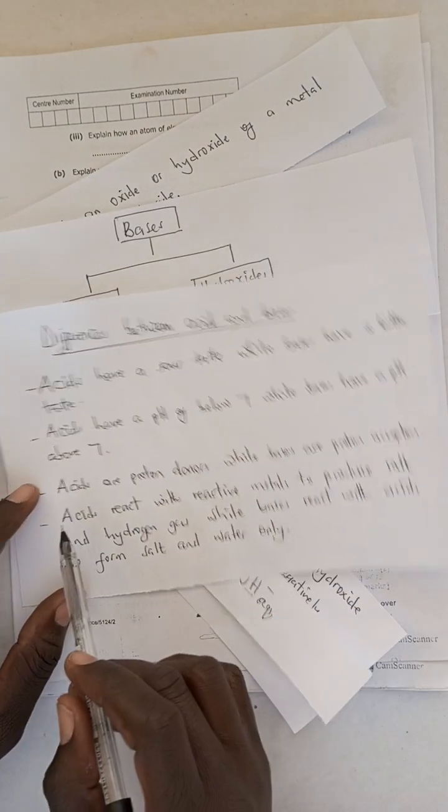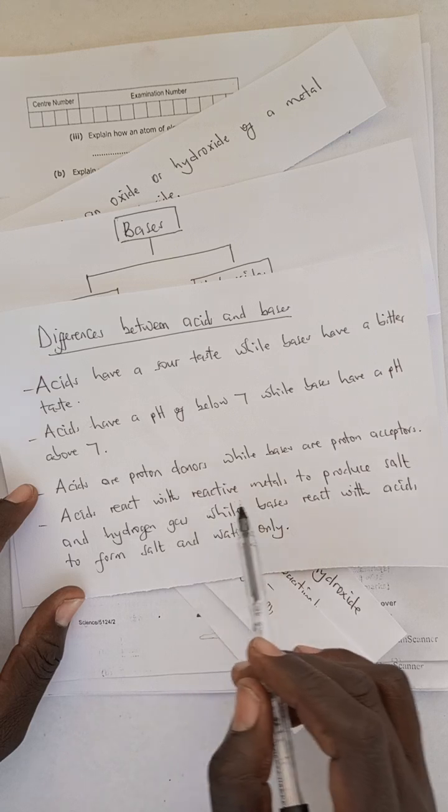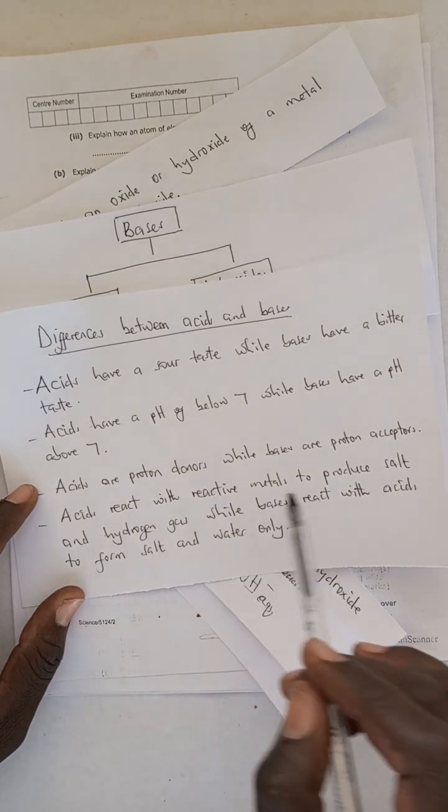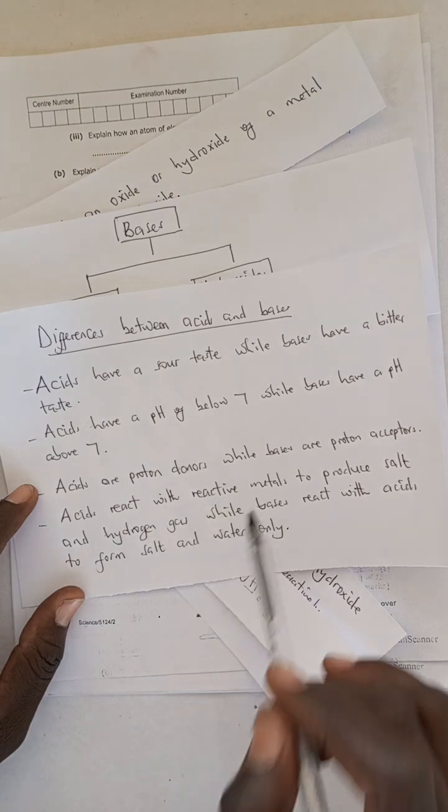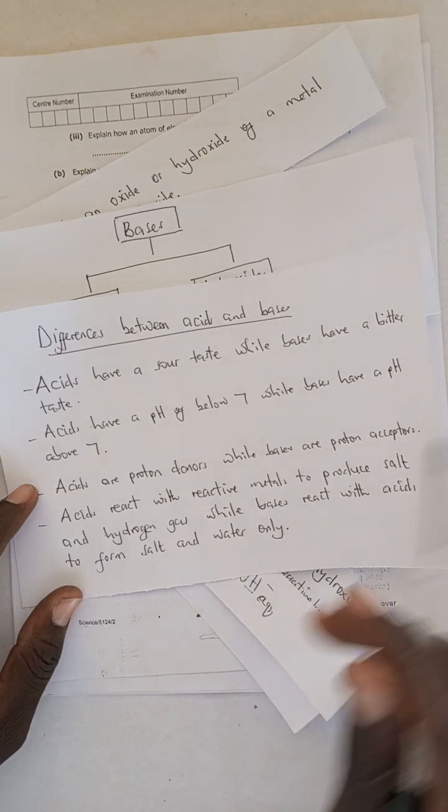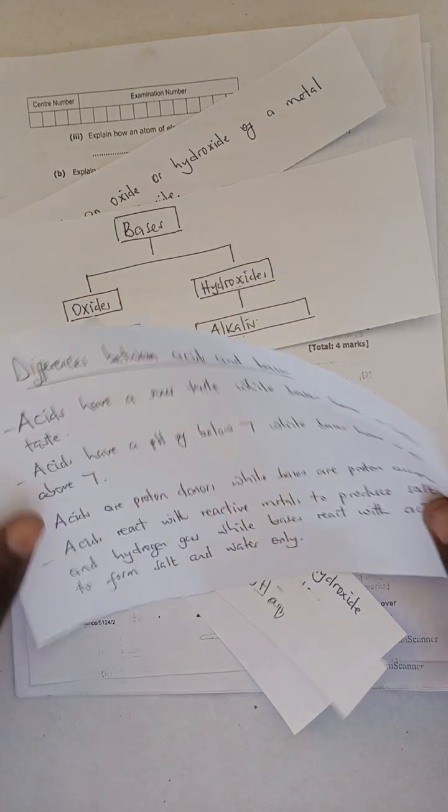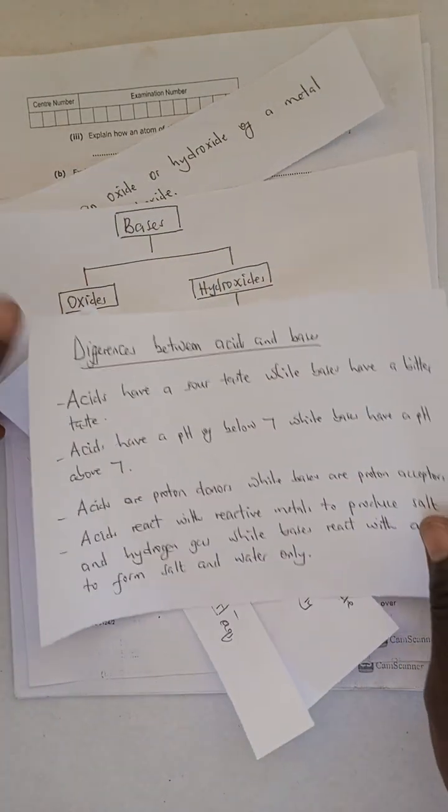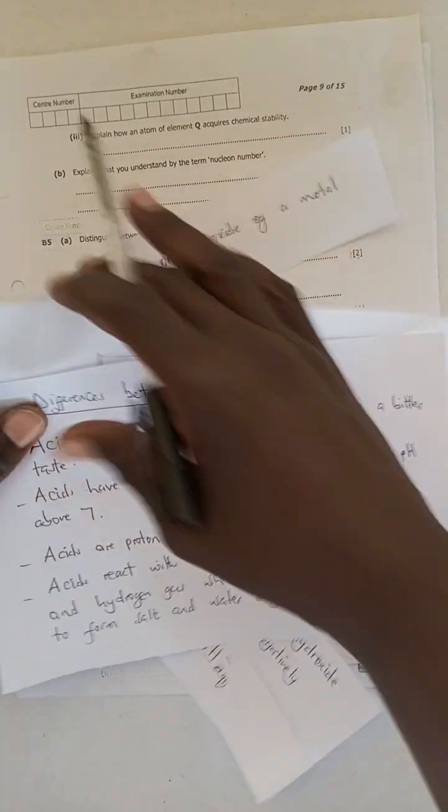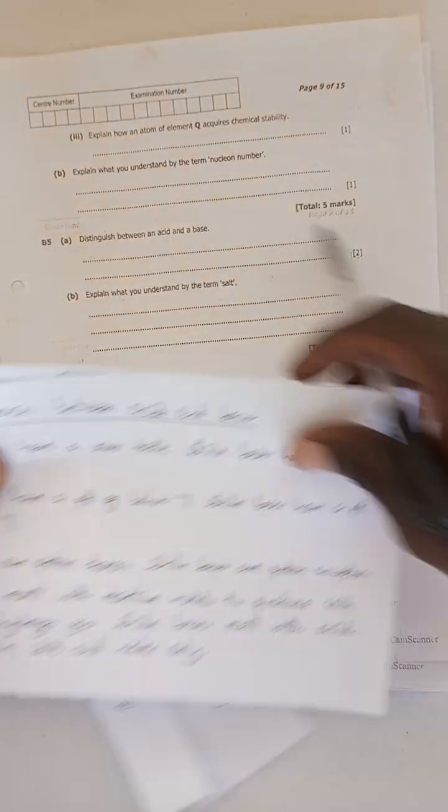Then another difference is that an acid reacts with a reactive metal to produce a salt. In the same capacity of producing a salt, a base would actually react with an acid in order for it to produce a salt. So those are some of the differences between acids and bases.